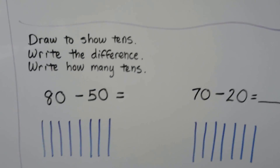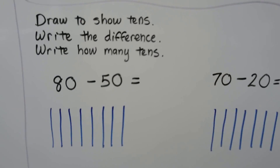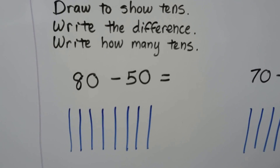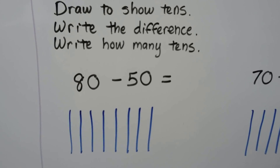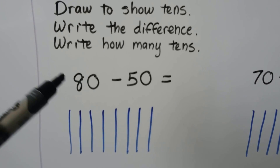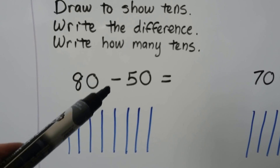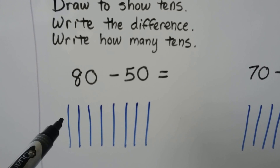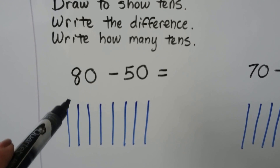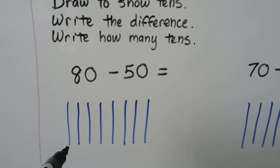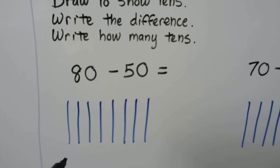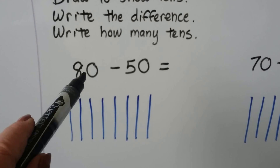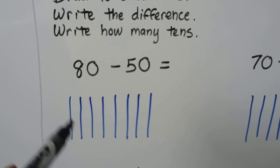Draw to show tens, write the difference, write how many tens. We have eighty minus fifty. We can pretend that each blue line is a ten, and we can make eight tens for the eighty: ten, twenty, thirty, forty, fifty, sixty, seventy, eighty.